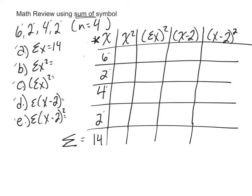Next one is x squared. If I square 6, I get 36, square 2, I get 4, when I square 4, I get 16, and 2 squared is 4. So sum of x squared is just adding up 36 and 4 and 16 and 4, giving me 60.